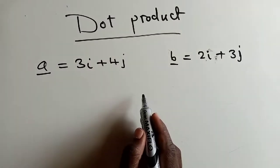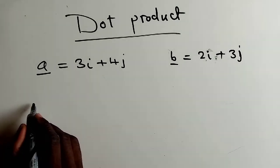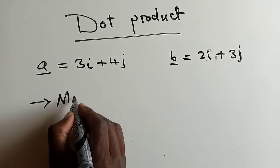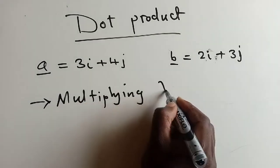So now, you want to find a dot product of these two vectors. First of all, what is a dot product? This is simply a way of multiplying vectors.